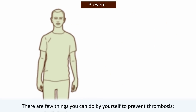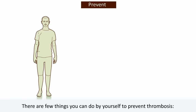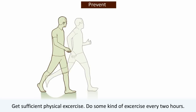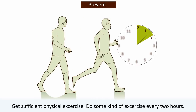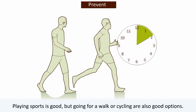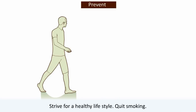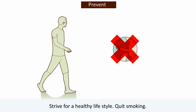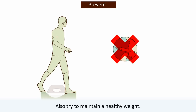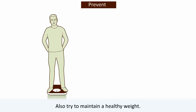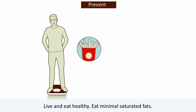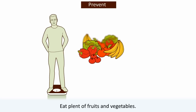There are a few things you can do yourself to prevent thrombosis. Get sufficient physical exercise — do some kind of exercise every two hours. Playing sports is good, but going for a walk or cycling are also good options. Strive for a healthy lifestyle: quit smoking, as it is a high risk factor for thrombosis. Try to maintain a healthy weight, eat minimal saturated fats, and eat plenty of fruits and vegetables.